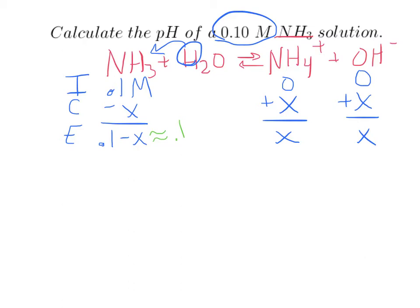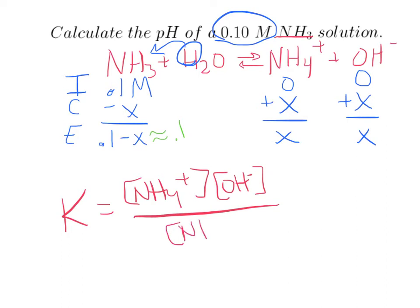Okay, so now all I have to do is plug that into a K expression. Kb equals NH4 plus times OH minus over NH3. Maybe you've been noticing that we're completely ignoring water in this case, and in all of these cases, because water's a liquid, and pure liquids do not get included in the equilibrium expression. Also because water's in so much excess, it's not going to affect anything anyway. And again, since this is a base, it's not KA, it's KB for bases.